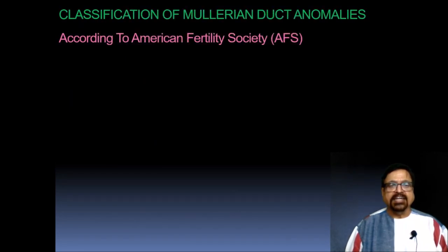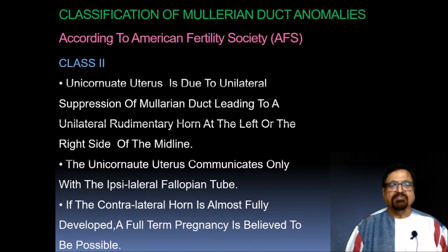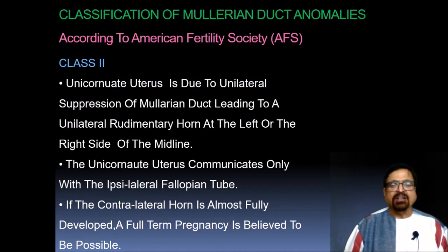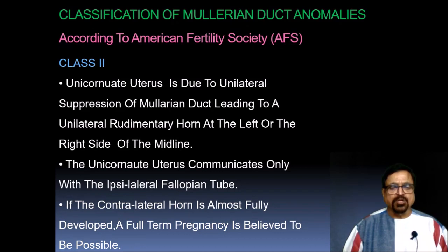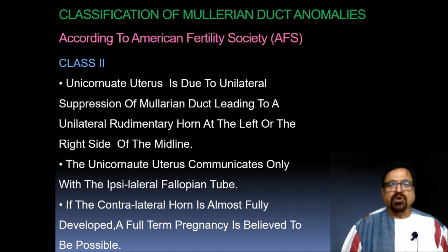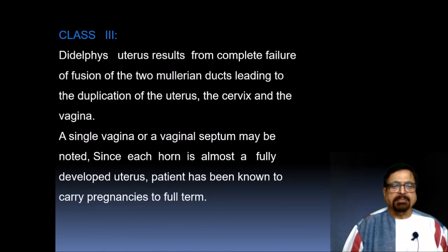Continuing the classification: Class 2 is the unicornuate uterus, which is due to unilateral separation of the Mullerian ducts, leading to a unilateral rudimentary horn on the left or right side of the midline. The unicornuate uterus communicates only with the ipsilateral fallopian tube. If the contralateral horn is almost fully developed, a full-term pregnancy is believed to be possible, but precautions must be taken — especially after 32 weeks — to avoid premature labour.